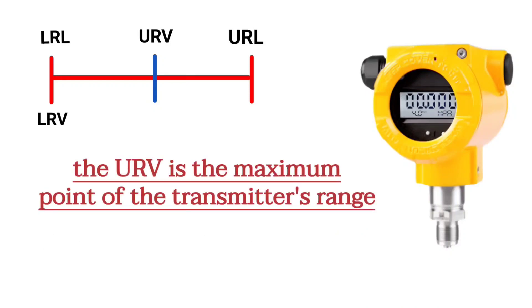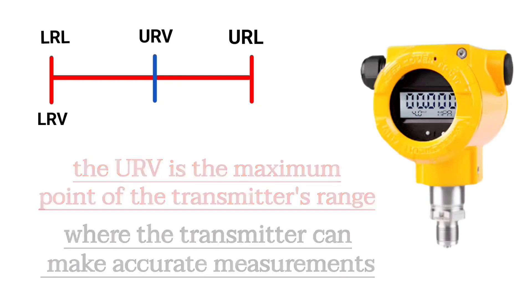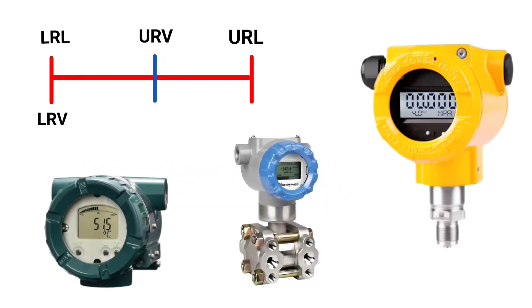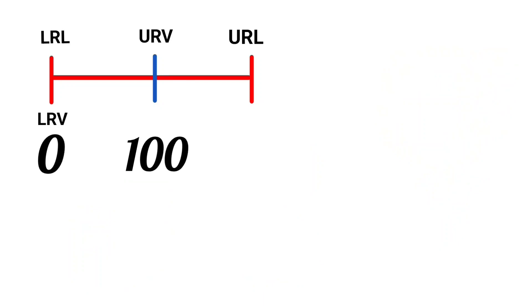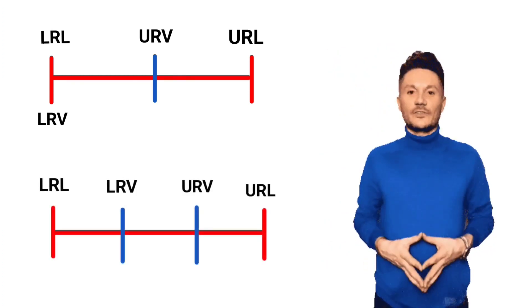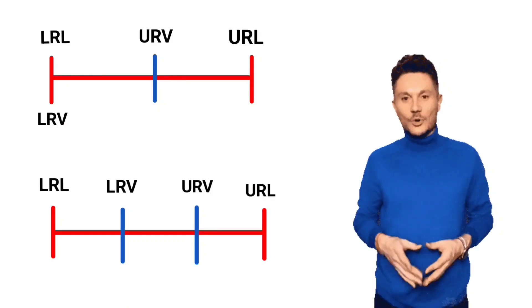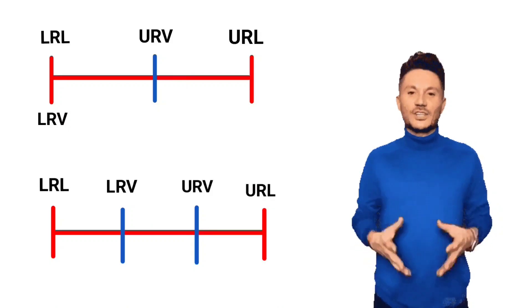Whereas URV is the maximum point of the transmitter's range where the transmitter can make accurate measurements. The transmitter will not give reliable readings on measurements above the URV. Using the same example, if the range is 0 to 100 bar, URV will be 100 bar, meaning readings taken above 100 bar will not be accurate. If LRV and URV are not selected correctly, measurements may be inaccurate and system performance may be affected.